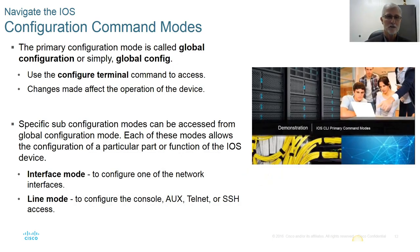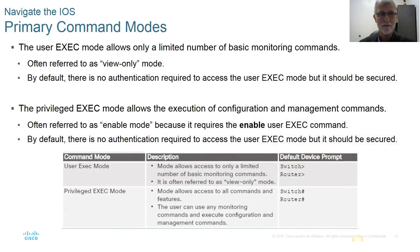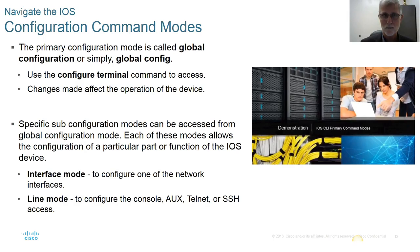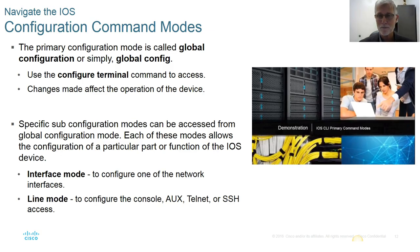The primary mode used to make changes is called global configuration mode. To get into it, you must first be in privilege mode, then type configure terminal — or the shortcut conf t (C-O-N-F space T). This indicates you want to make physical changes to the switch or router you're connected to. So the workflow is: power up the switch, get the user exec prompt with the greater-than sign, type enable, enter your credentials, see the prompt change, then type configure terminal.